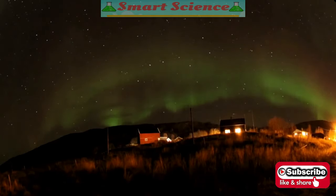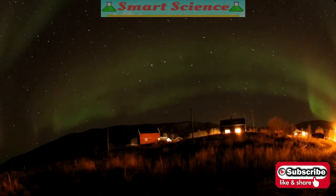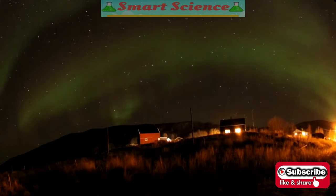In an auroral substorm, sheets twist into waves and curls. Our ancestors saw great dragons or serpents in the sky.